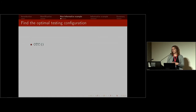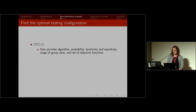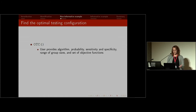The primary function added to the bin group package is called the OTC function, for optimal testing configuration. The user provides an algorithm, a probability of disease, sensitivity and specificity of the diagnostic test, a range of group sizes over which to optimize, and a set of objective functions — you can include any of the three that I mentioned.